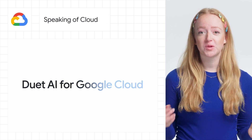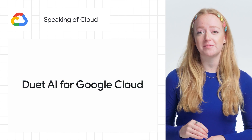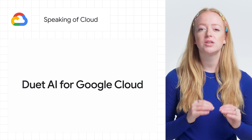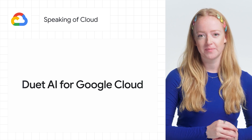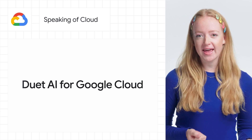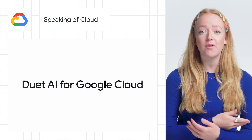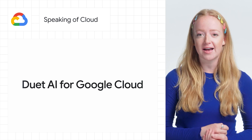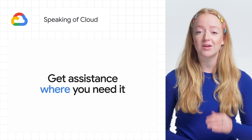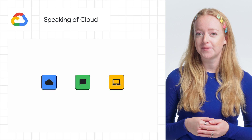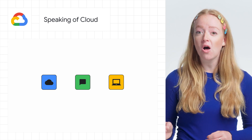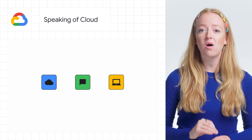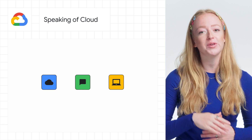Speaking of cloud, we are transforming cloud development with Duet AI — a new generative AI-powered assistant that acts as your expert pair programmer. We believe Duet AI fundamentally changes how developers of all skill levels can build cloud applications. It provides assistance where you need it — within cloud console, chat, and your IDE. With Duet AI, you will also have the power to not just call Google-trained models, but also custom code models trained directly on your code.